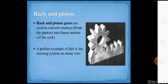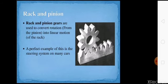Rack and pinion gears are used to convert rotation from the pinion into linear motion of the rack. A perfect example of this is the steering system in many cars.